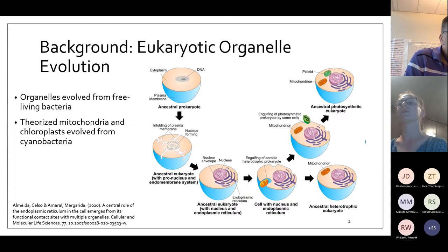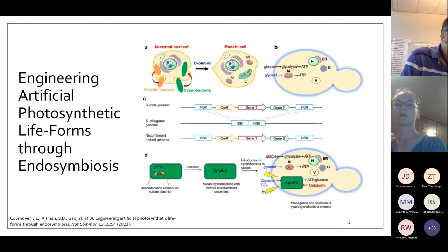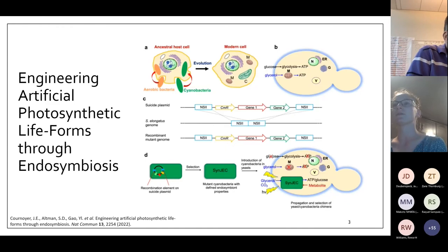Specifically, we look at the mitochondria and chloroplasts themselves because those are organelles with their own genomes, which is why our lab currently focuses on cyanobacteria for creating artificial plant cells. Earlier this year, our lab published a paper on engineering artificial photosynthetic life forms through endosymbiosis. Dr. Yang Li Gao is also at this workshop — he is one of the authors of the paper — and I'm going to go briefly over our platform, the results we got, and then how that applies to the minimal cell.